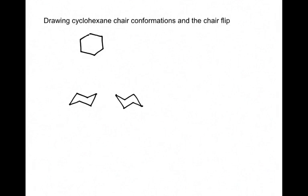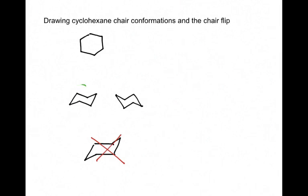One thing I want to point out is that both of those chair conformations look good. A common mistake students make is they draw their first two lines parallel and come up with something like this — this is incorrect. When we get to drawing all of the bonds on each carbon, we're going to have difficulties if we draw the chair like this. So we really want to make sure that we have this at an angle.